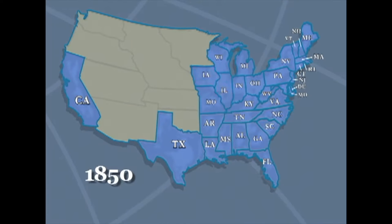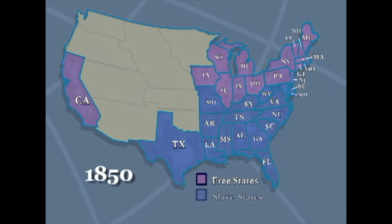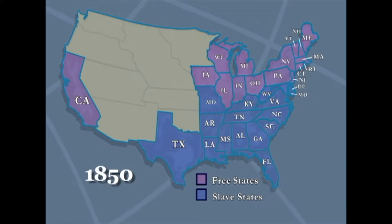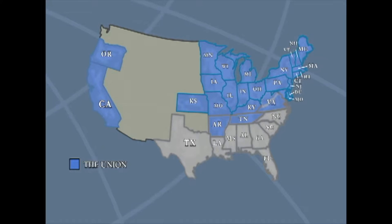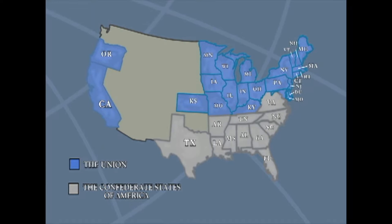By 1850, there were 15 free states and 15 slave states. The quarrel over the expansion of slavery continued to divide the country, and tensions grew throughout the decade. One by one, the southern states voted to secede or leave the United States. South Carolina, Mississippi, Florida, Alabama, Georgia, Louisiana, Texas, North Carolina, Virginia, Arkansas, and Tennessee formed a new country: the Confederate States of America, or the Confederacy.